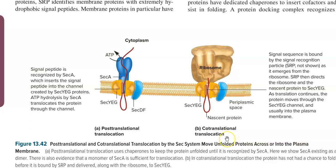In post-translational translocation, after translation is completed, the translocation process begins. The signal peptide at the N-terminal of the polypeptide is recognized by SecA protein, one component of this translocation system. SecA helps in inserting the signal peptide into the channel created by the SecYEG protein. The other protein, SecDF, also forms a component of this post-translational translocator system.